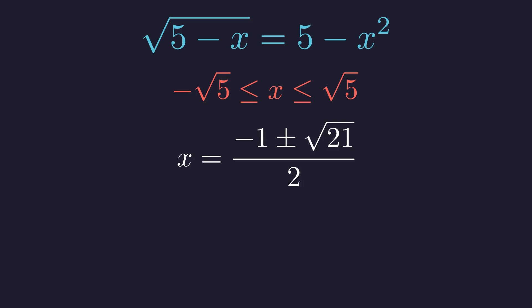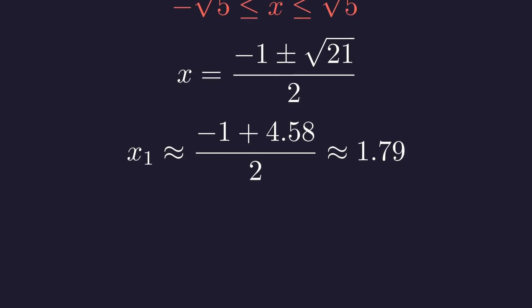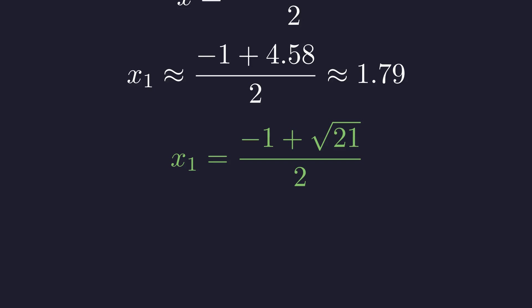Back to our potential solutions from case one. We need to check if these values fall within our valid domain. This solution is approximately 1.79. Since the square root of 5 is about 2.24, this value is inside our valid domain. Direct substitution confirms it solves the original equation. We've found our first real solution.